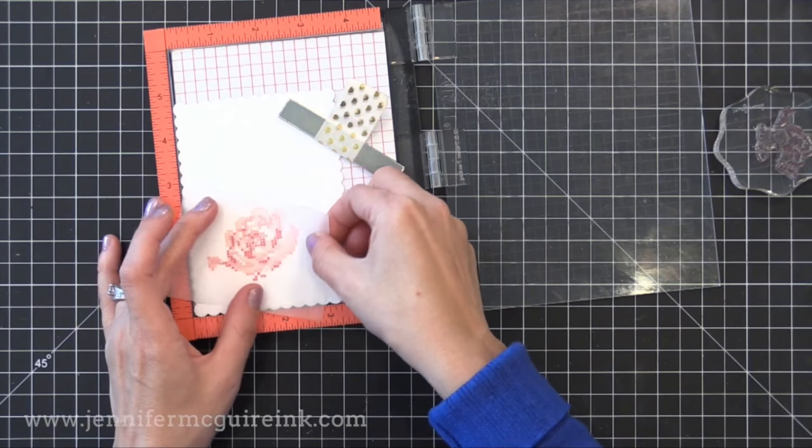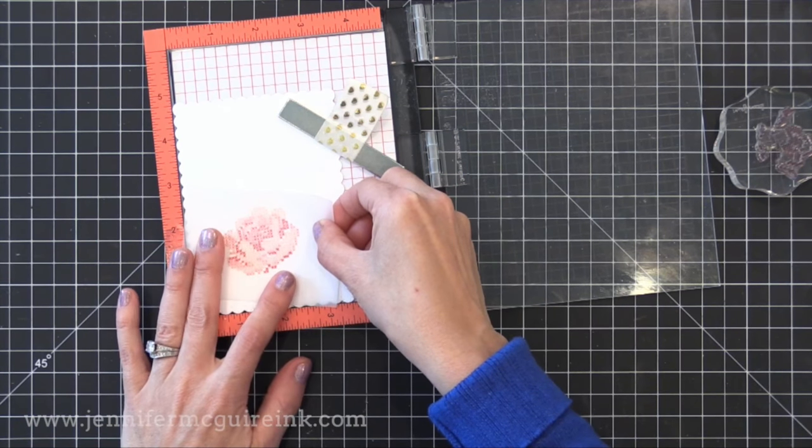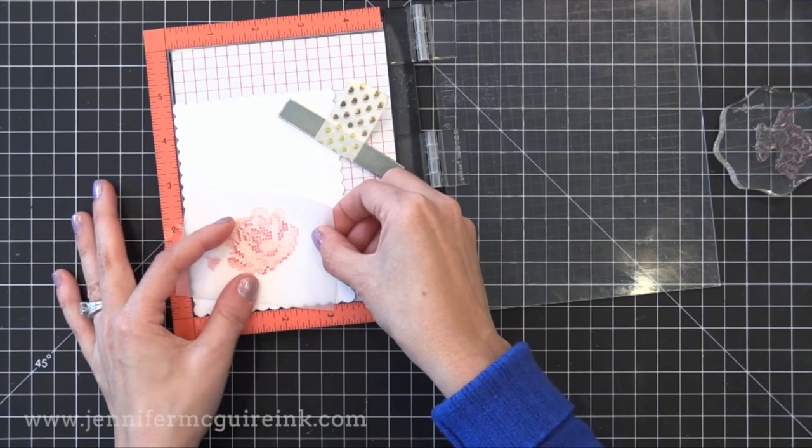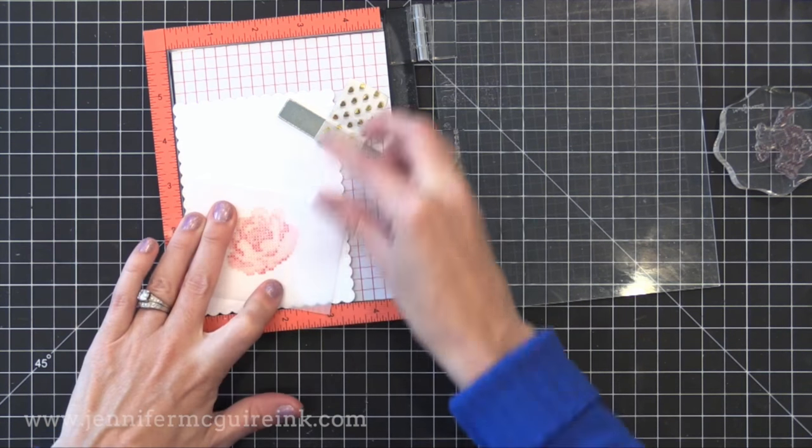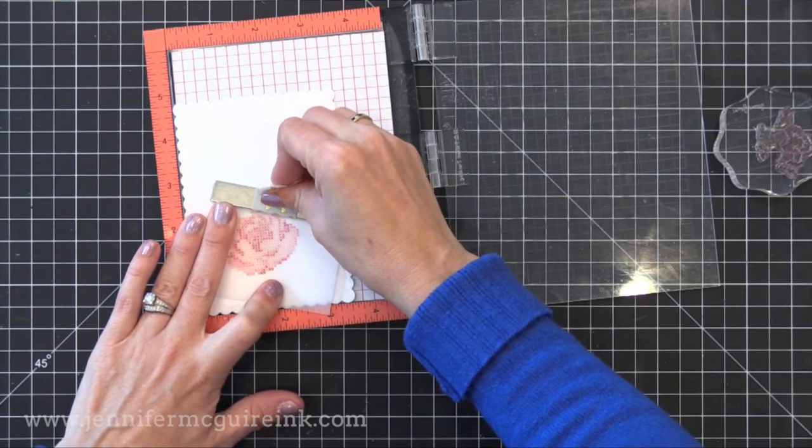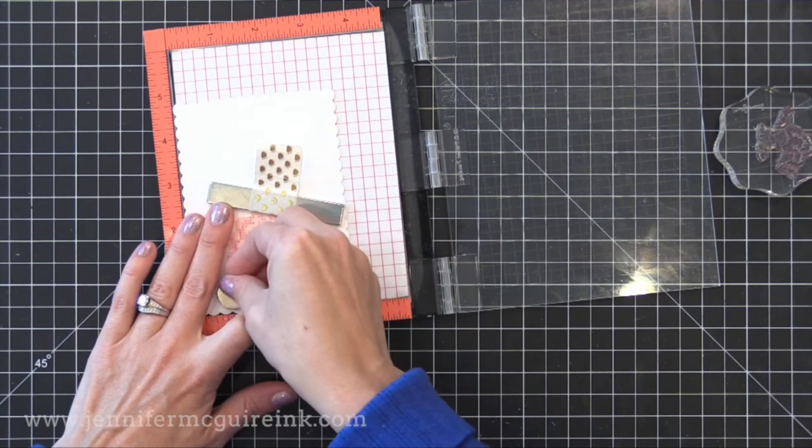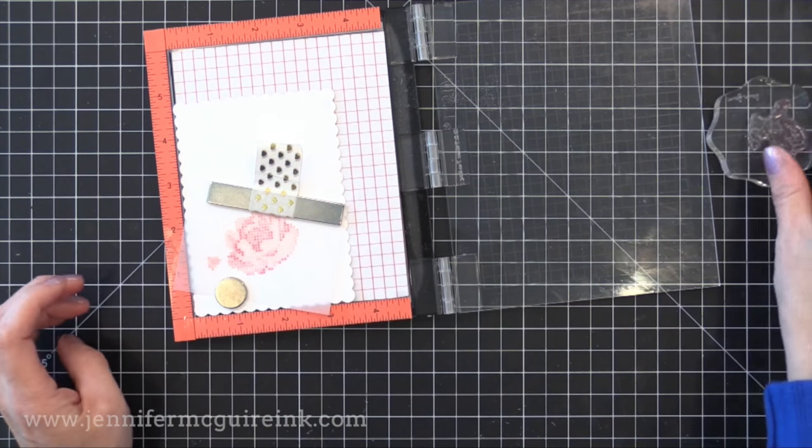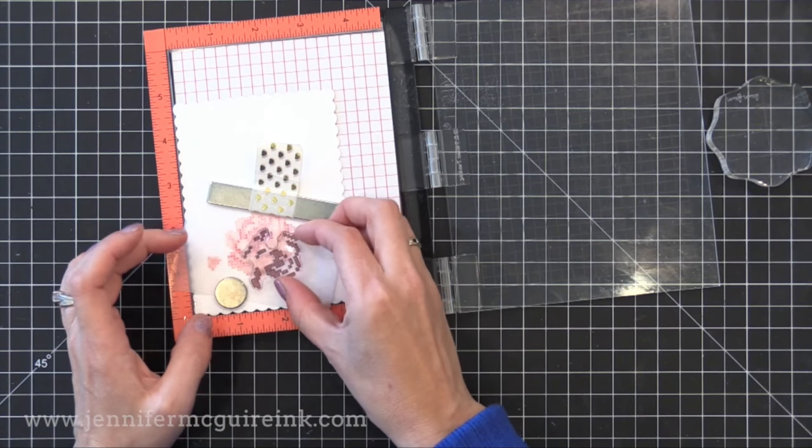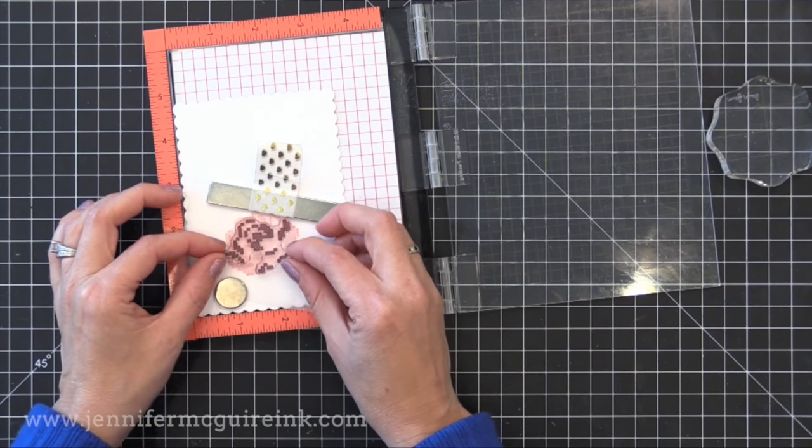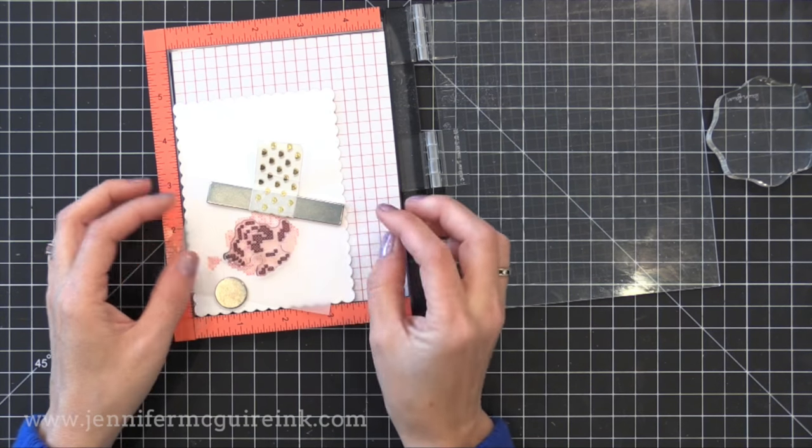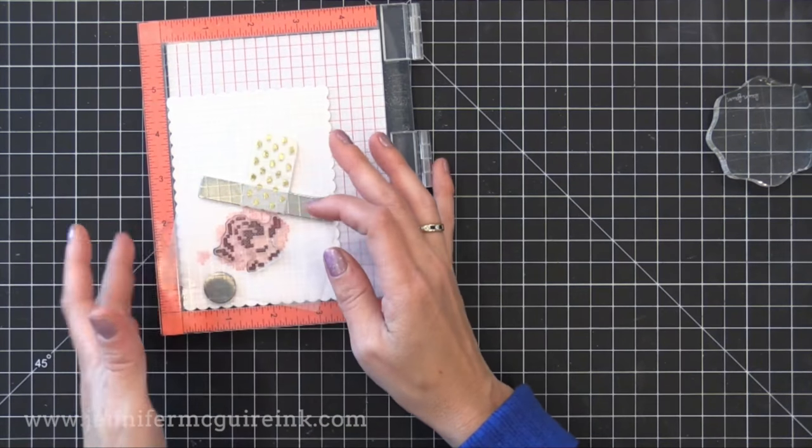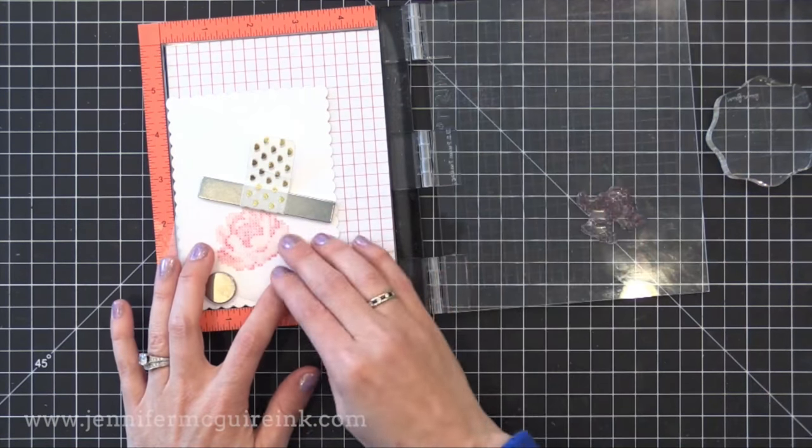Now it's time for the third layer on this flower. So I stamped it again on vellum, and I'm just lining it up with the image that I stamped on my panel. So you can see how it lines up nicely. Put the magnet on it to hold it in place. Then you line up the stamp again with whatever you stamped on the vellum. Again, it's really good to look from the side to make sure it's lined up nicely. Once you have it just right, you can close the door on your MISTI, and you're ready to stamp your third layer.